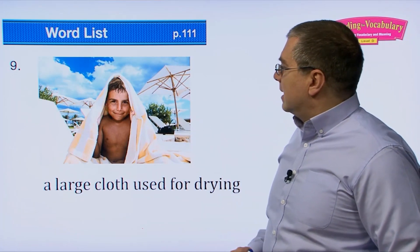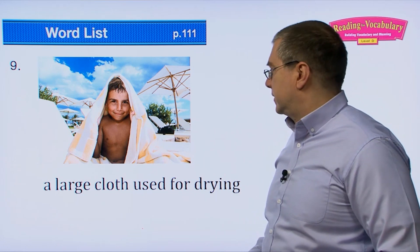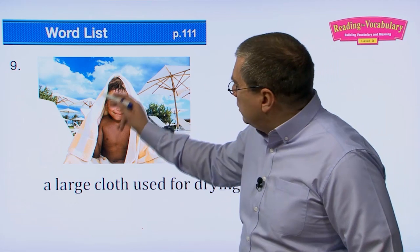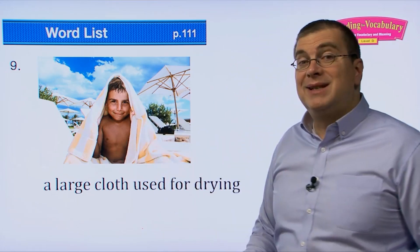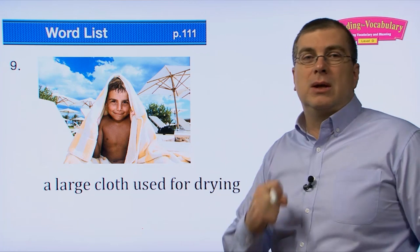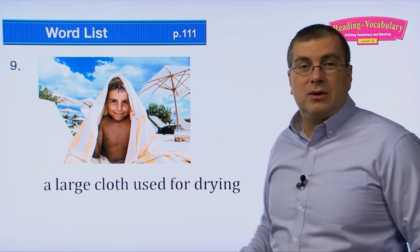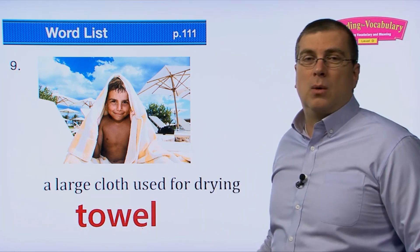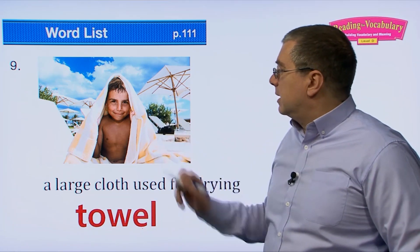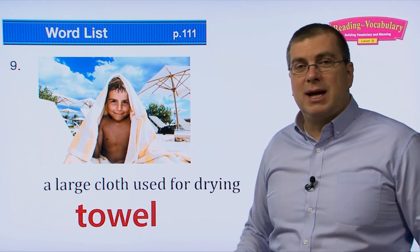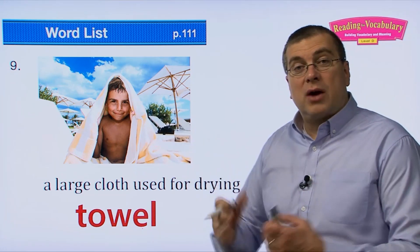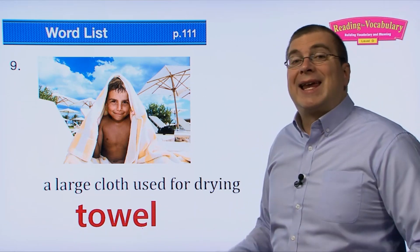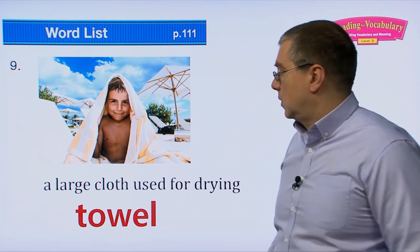Number nine: a large cloth used for drying — that's a towel. You probably take it to the beach, use it when you go swimming, or when you take a shower or bath. If you're in an English-speaking country and want a cloth to dry yourself off, you can ask: 'Is there a towel?' or 'Can I get a towel?'